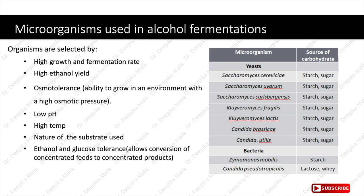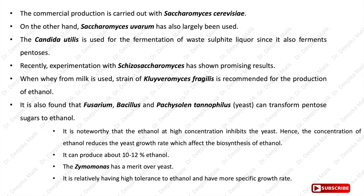The organism should withstand high concentration of the substrate, i.e., glucose, and high concentration of the product, i.e., ethanol. The commercial production of ethanol is carried out with Saccharomyces cerevisiae. Saccharomyces uvarum has also largely been used. Candida utilis is used for fermentation of waste sulfite liquor since it also ferments pentoses. Recently, experimentation with Schizosaccharomyces has shown promising results.